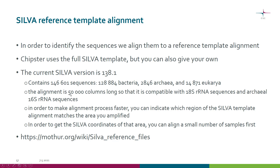The alignment is 50,000 columns long, so it is very long. You need to remember that you only PCR'd up a very small part of, typically, the 16S ribosomal RNA gene. So in order to make the alignment process faster, you can target the alignment process to that region of the SILVA template which matches the area that you amplified.